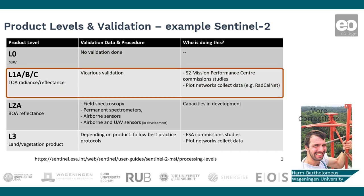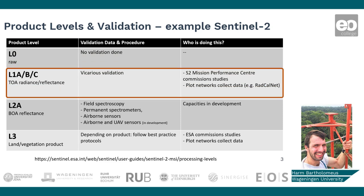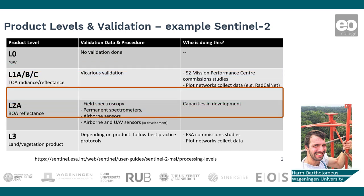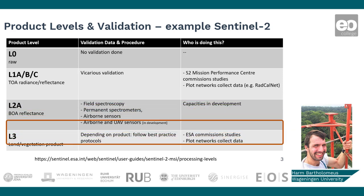Level 1 products are converted to top-of-atmosphere radiance or reflectance. Level 2 products are corrected for atmospheric disturbances. Level 3 products are derived products, so they don't describe the reflectance or radiance at different wavelengths anymore, but for example vegetation indices, LAI products, or other variables that can be derived.